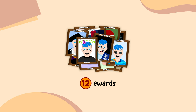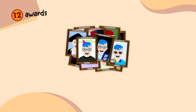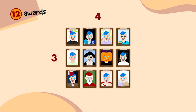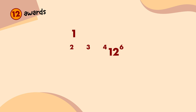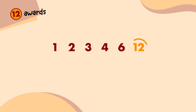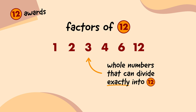If I had 12 awards to hang up on the wall and I wanted a layout of rows that each had the same amount, there are a couple of options: 2 rows of 6, 3 rows of 4, 4 rows of 3, or 6 rows of 2. I could even do 1 row of 12 or 12 rows of 1. All of those numbers — 1, 2, 3, 4, 6, and 12 — are the factors of 12. A factor is a whole number that divides exactly into another number.